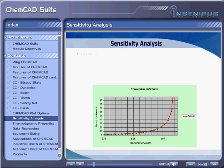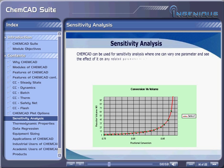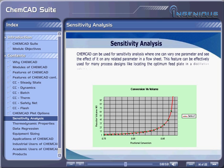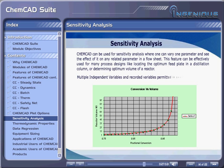Sensitivity Analysis. ChemCAD can be used for sensitivity analysis, where one can vary one parameter and see the effect of it on any related parameter in a flow sheet. This feature can be effectively used for many process designs, like locating the optimum feed plate in a distillation column, or determining the optimum volume of a reactor. Multiple independent variables and recorded variables are permitted in sensitivity analysis.